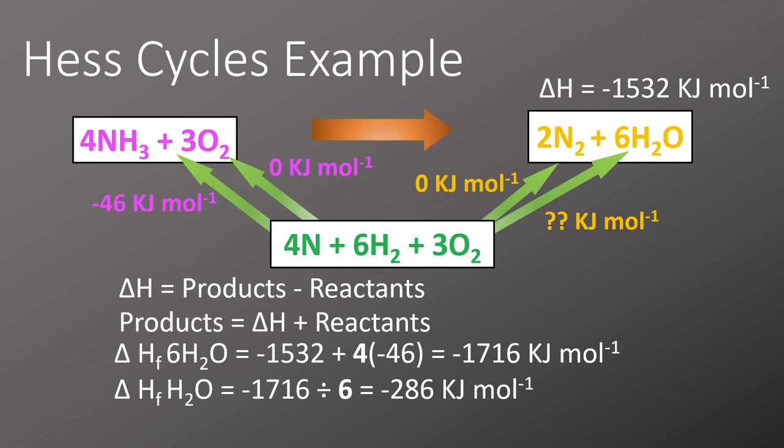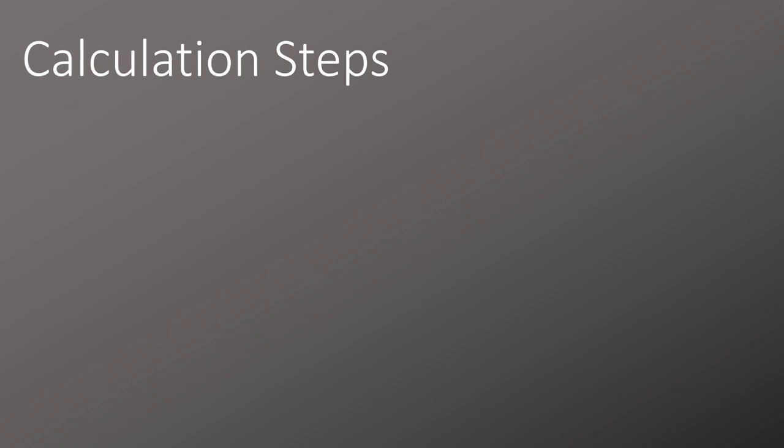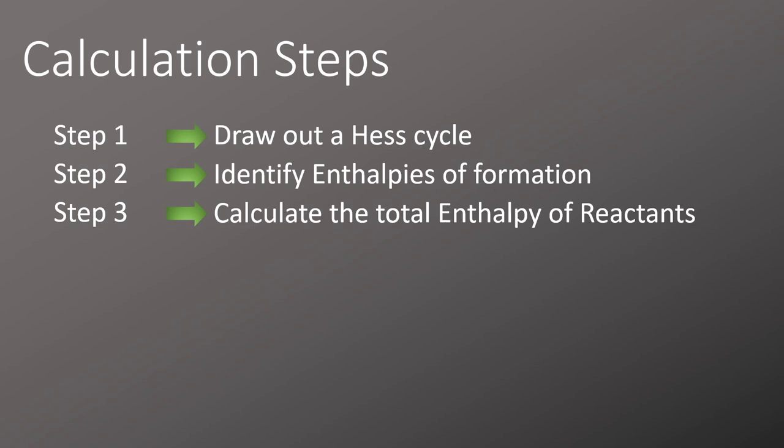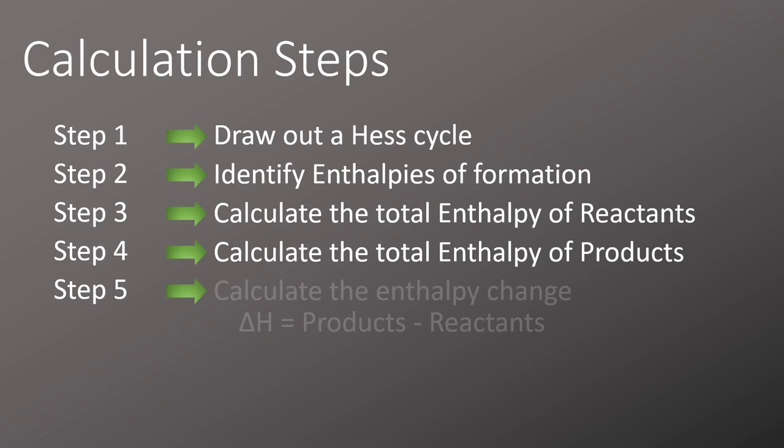It can be useful to summarize that calculation into 5 easy steps. First always draw a Hess cycle. Most questions will give you marks for showing a completed cycle. Second find the values from the question and add them in. Third calculate the totals for the enthalpy of reactants. Fourth then calculate the total for enthalpy of products and then the last step carry out the calculation for the enthalpy change. Remember formation is always products minus reactants.